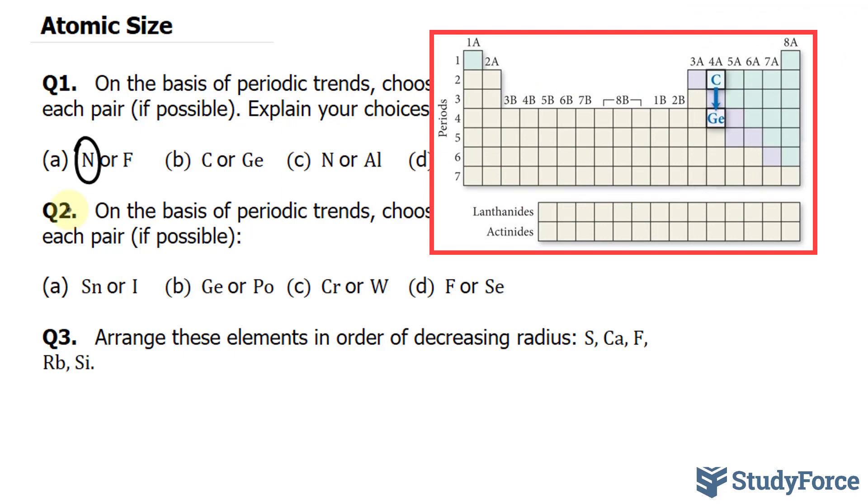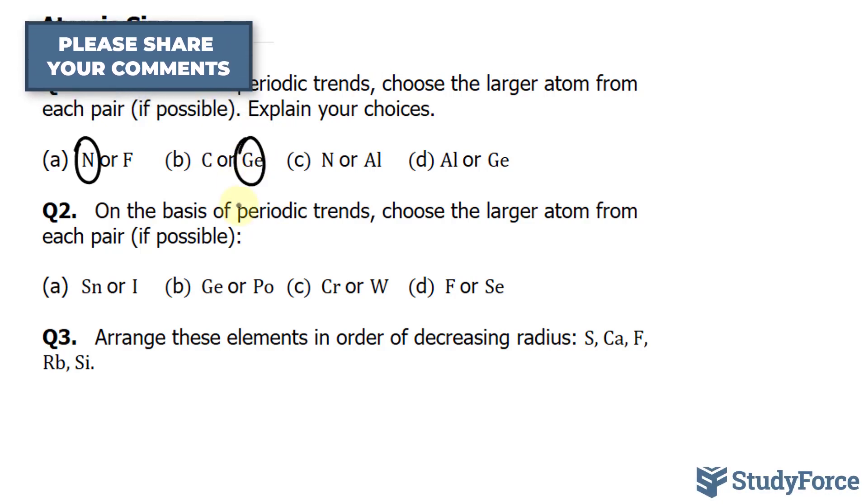And take a look, if you see the periodic table on your screen, atomic size increases as you move down a column because the outermost electrons occupy orbitals with a higher principal quantum number. And for this reason, they're larger, resulting in a larger atom overall. So germanium is definitely larger than carbon.